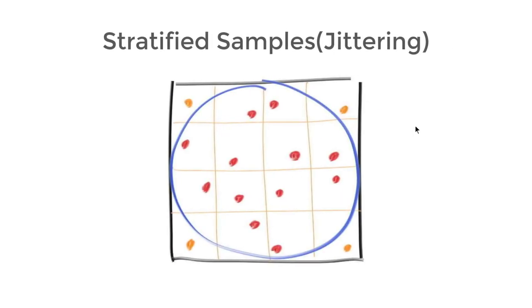We can mitigate this kind of diminishing return by stratifying the samples. It is sometimes called jittering. Instead of taking totally random samples, we take a grid and make one sample within each grid. Unfortunately, I didn't make a demo for this one.